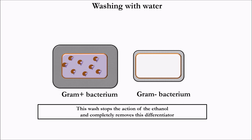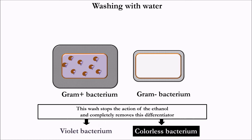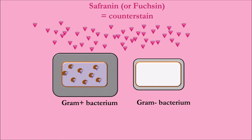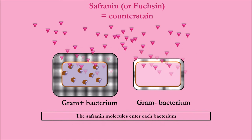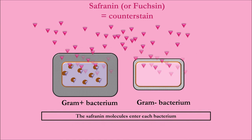If we stopped the staining here, we would not be able to see the colorless gram negative bacteria under a microscope. This is why a secondary dye is applied to stain the gram negative bacteria — the counterstain safranine. Safranine molecules enter each bacterium, and finally the gram positive bacteria which were purple remain purple, while the gram negative bacteria stain pink.